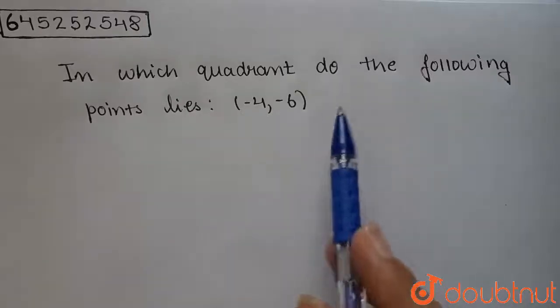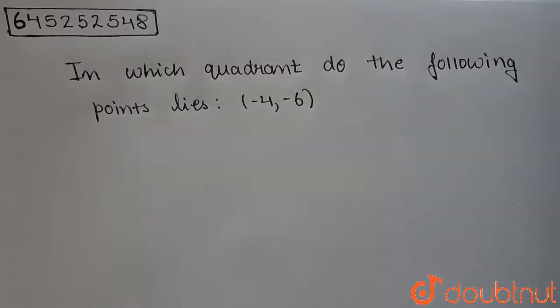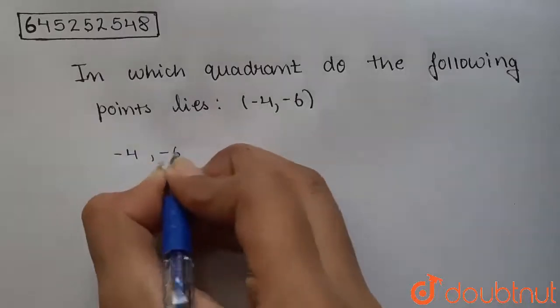Students, the question is in which quadrant do the following points lie? The point is minus 4 comma minus 6. So the given point is minus 4 comma minus 6.